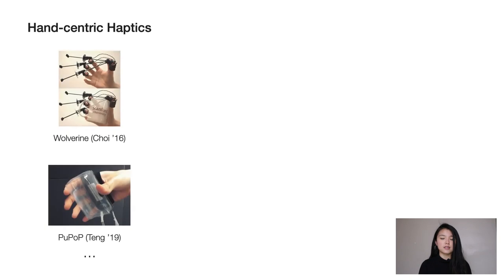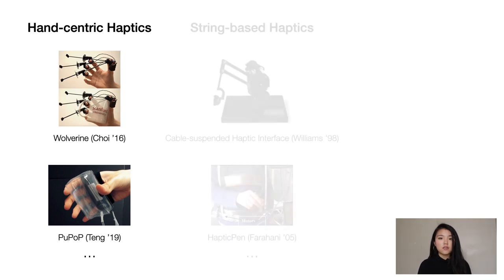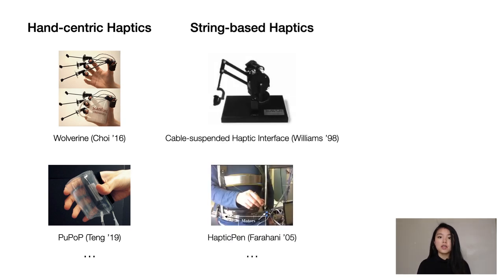Closer to our work are VR haptic systems for the arm and hands. Researchers have rendered haptic illusions for grasp using mechanisms such as exoskeletons and pneumatics. Among them, strings offer a lightweight approach, allowing the main mechanism to be placed somewhere less cumbersome.